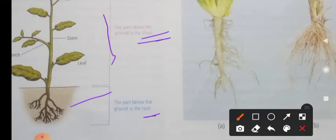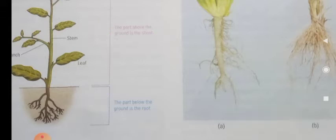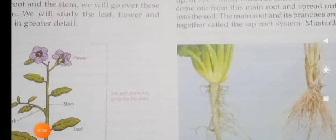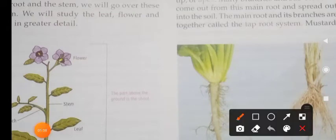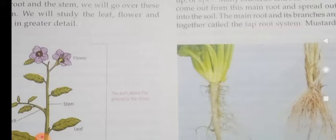We have already known this in our lower classes. Now we are going to learn about the root system. The part of the plant below the soil is called the root system. In the root system, there are two types of roots: one is called the tap root system and another one is called the fibrous root system.